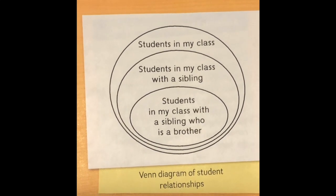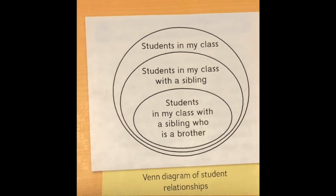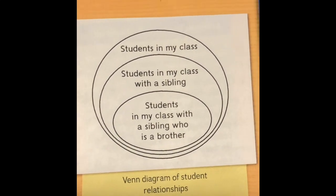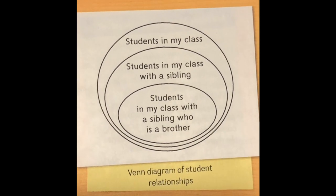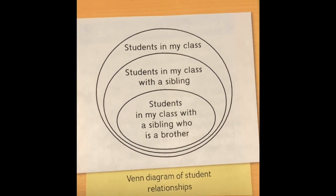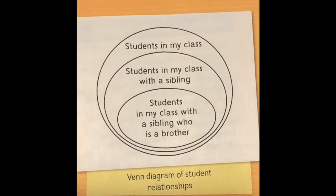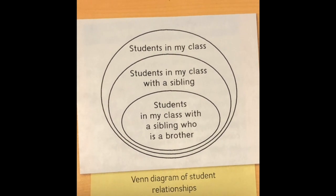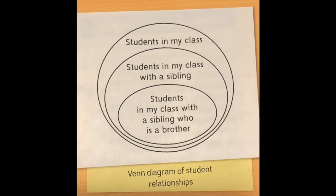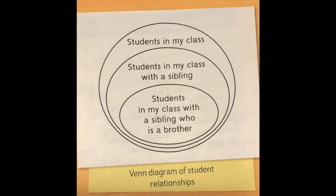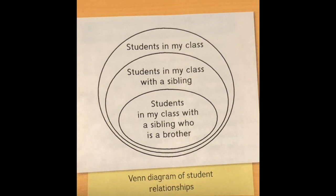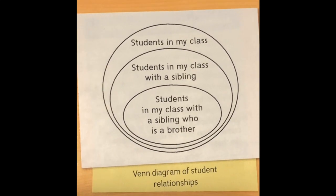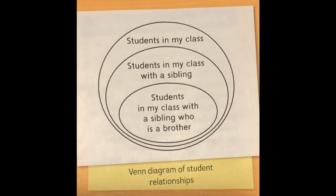What other subcategory is on a hierarchy? It could be students in my class who have a sibling who is a brother. Those students have an additional attribute — they have a brother. So the group at the bottom of a hierarchy is a subcategory of the group in the middle, and also a subcategory of the group at the top.